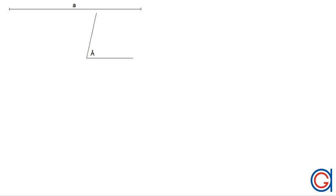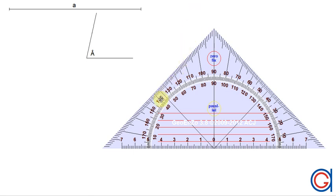Hello, today we are going to learn how to draw an isosceles triangle given its unequal side A and its opposite angle A.